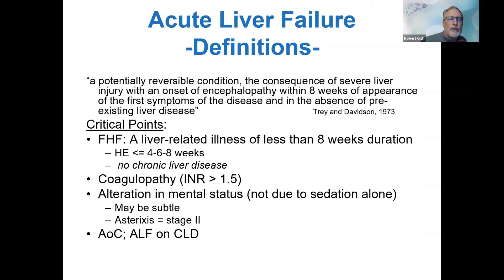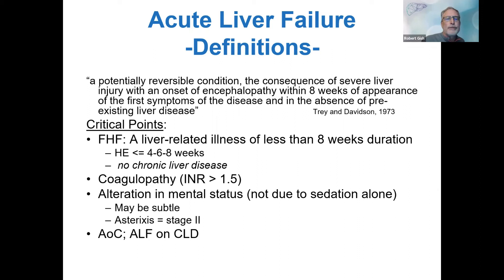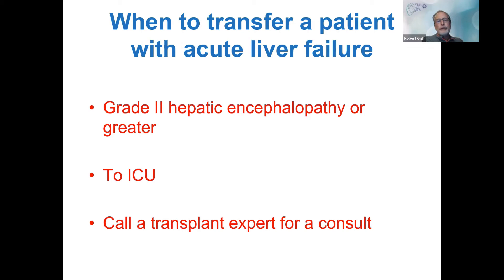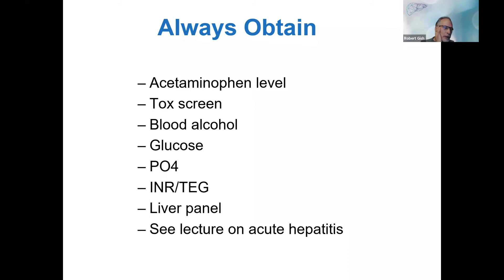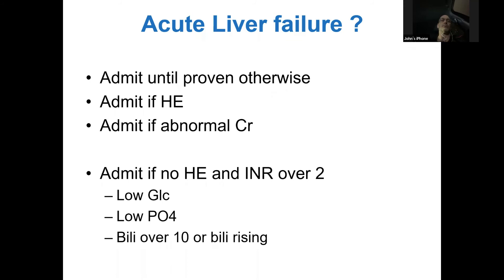Another definition of fulminant liver failure from Trey and Davidson — I basically use four weeks, but if encephalopathy is present within two weeks it may be hyperfulminant; more than eight weeks would be sub-fulminant. Do a full physical exam. Fulminant liver failure with MELD over 15 — call the transplant center and have them in the ICU. Grade two encephalopathy — consider transplant and have a low threshold to move to ICU. Glucose is very important because these patients can become hypoglycemic and seize. Phosphorus should be checked at least daily on any acute liver injury; if less than 2.5, aggressive IV phosphorus replacement. TEG is now standard for managing these patients.